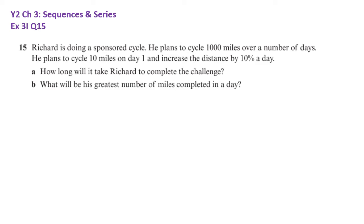So again, in this question, we're going to write out the sequence generated by the context here and label each term with what it represents. So we might start writing it like this to get a sense of what's going on. 10 miles in day one, increased by 10 percent, 11 miles day two, 12.1 miles day three.